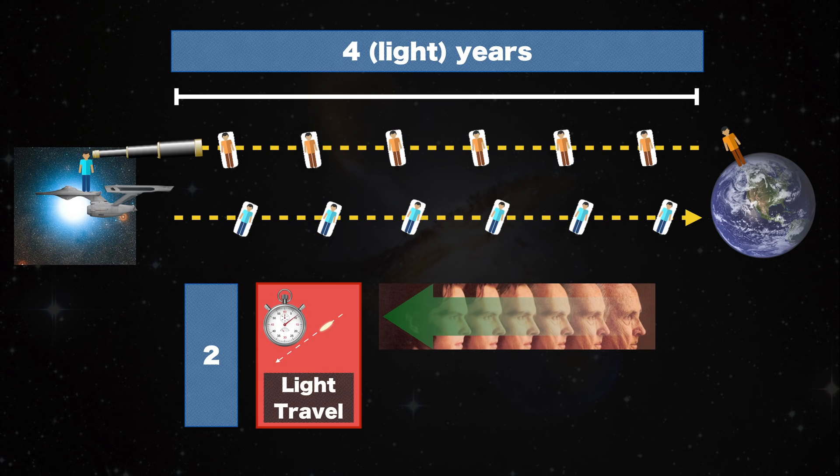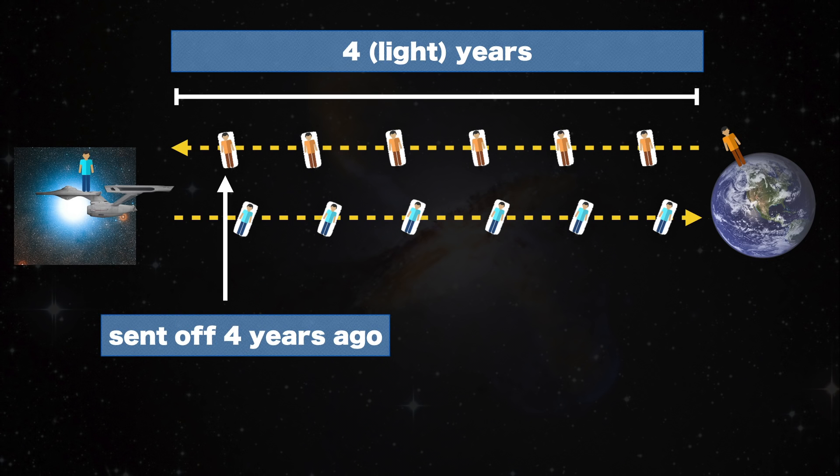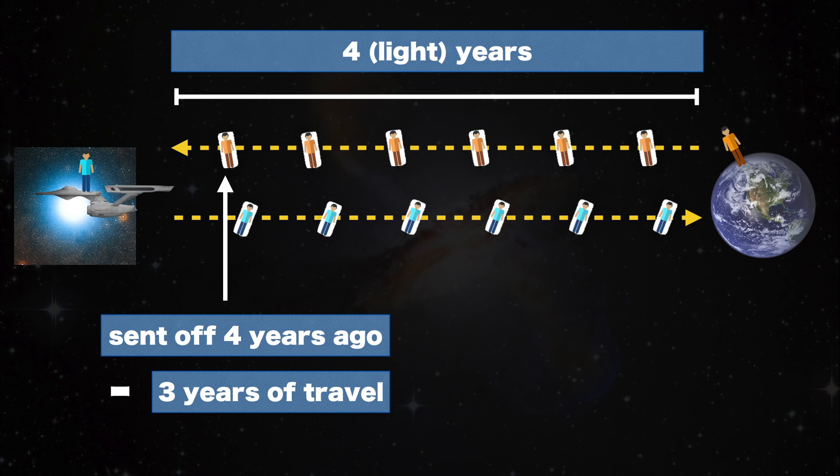This also makes them see each other age more slowly, so that when Space Twin arrives at the turning point, he will be looking four years into Earth's past, as he sees the light that Earth sent off four years ago.